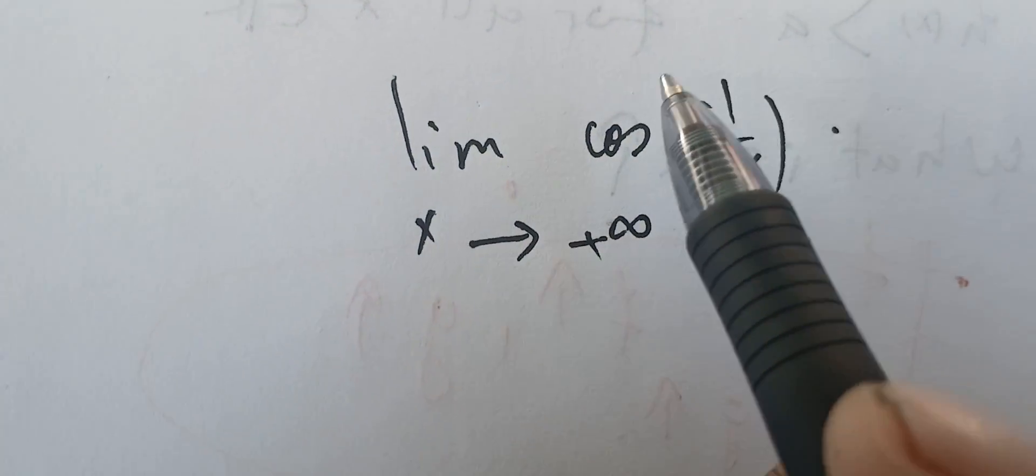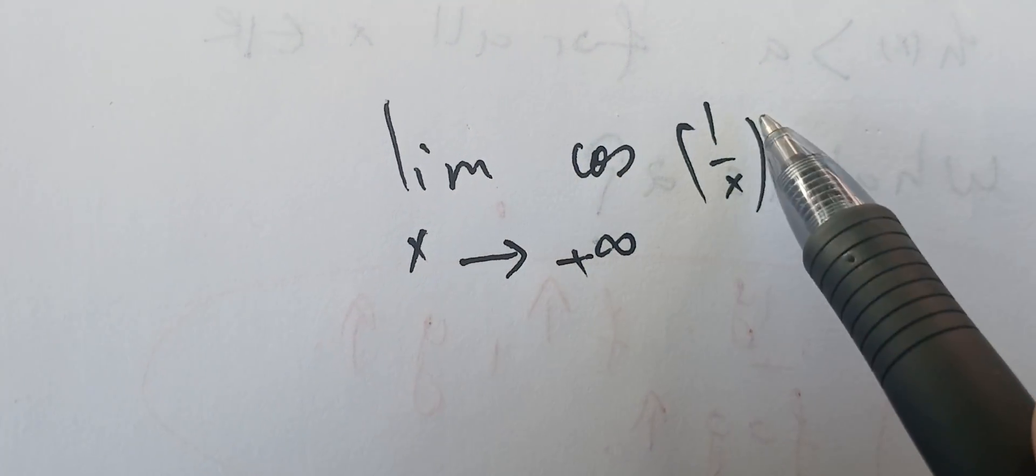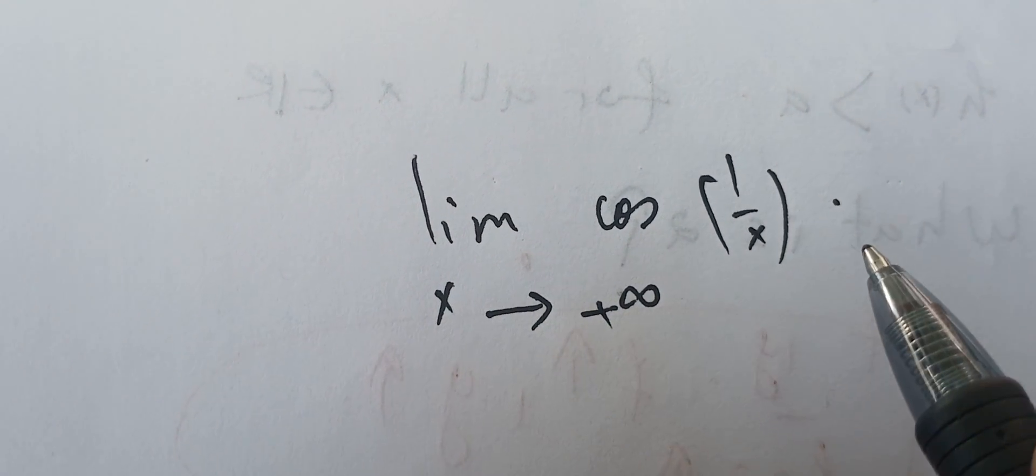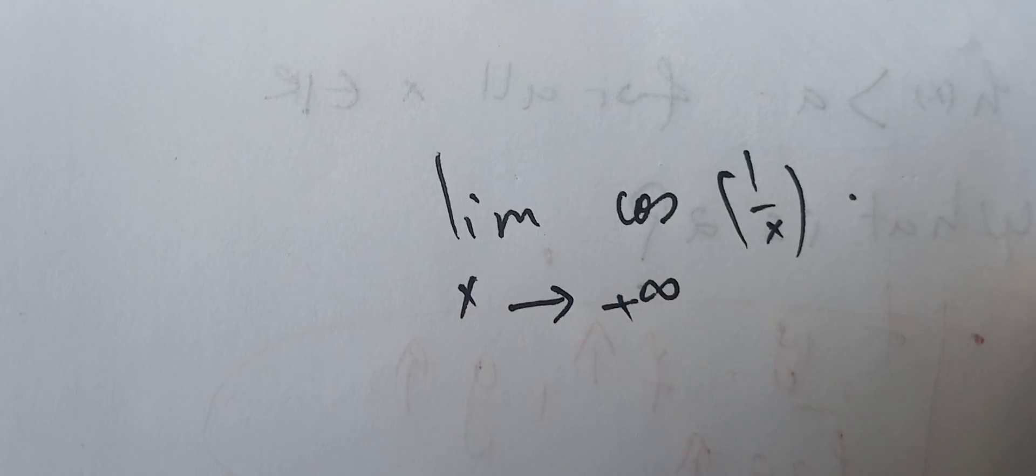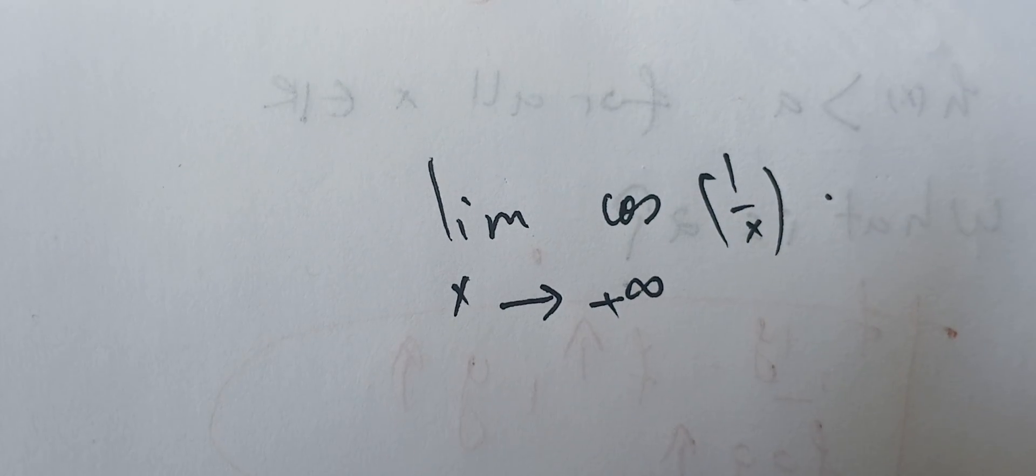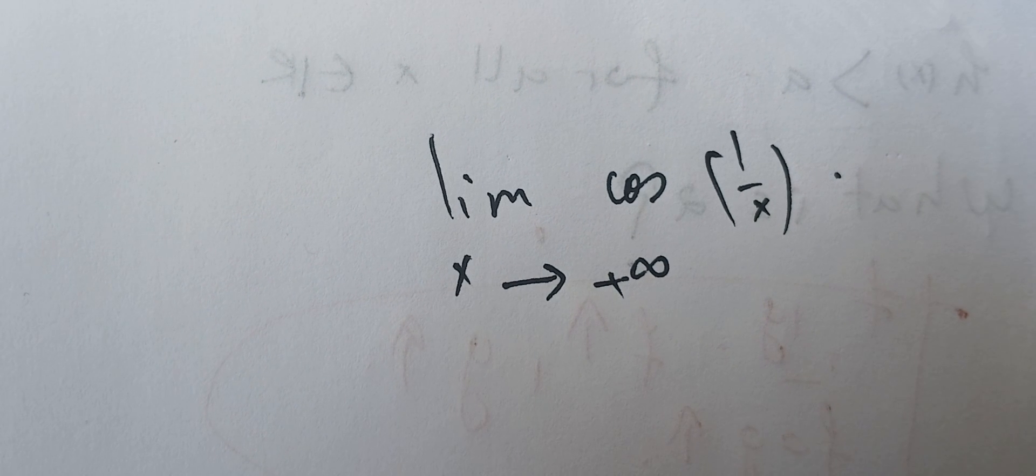Let's find the following limit. We have the cosine of 1 over x, and we want to find the limit as x goes to plus infinity. One key idea is that we can try some values.